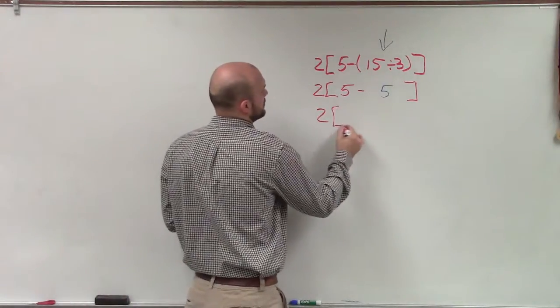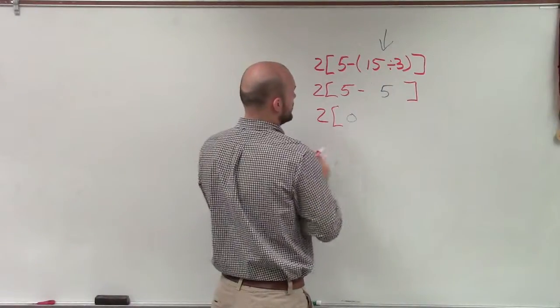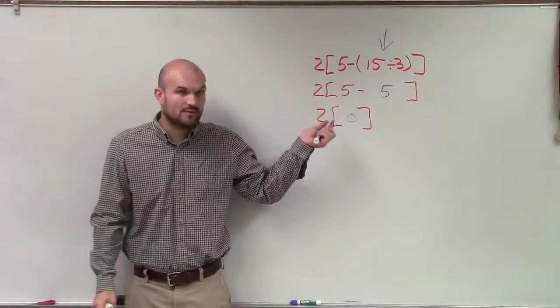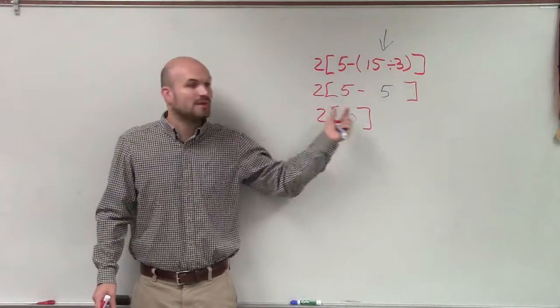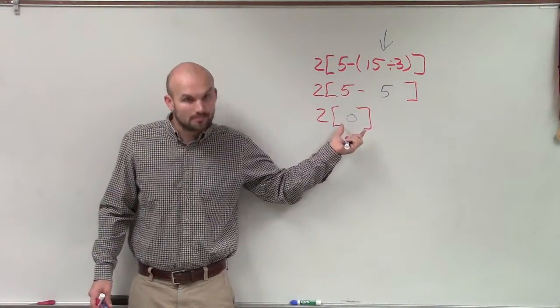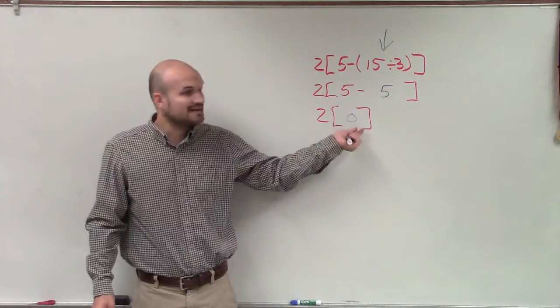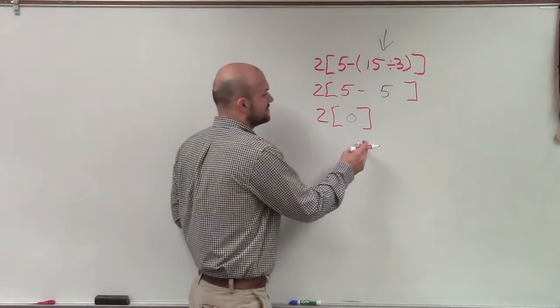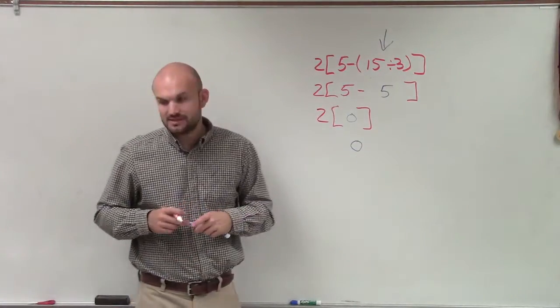So I have 2 bracket 0. Now, I need to multiply. When we have a number by a grouping symbol, we're going to apply multiplication. Anything times 0 is always going to be 0. So therefore, your final answer for this should have been 0.